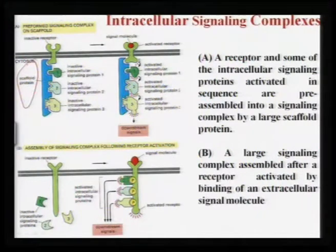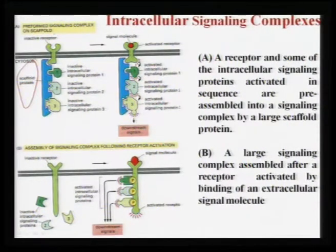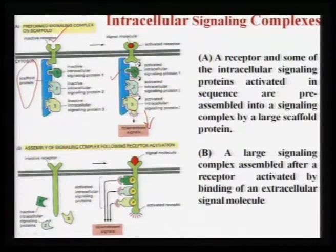This is your large scaffold protein. You can consider the scaffold protein as a base — a large structure of the protein molecule — where smaller intracellular signaling molecules 1, 2, 3 can be attached. This is your inactive receptor. Once the signal molecule comes, it becomes activated — switch is on. Once the switch is on, it will also activate the scaffold protein and as a result, these three protein molecules become activated, and subsequently the downstream signals will also be activated. This is called intracellular signaling complexes.